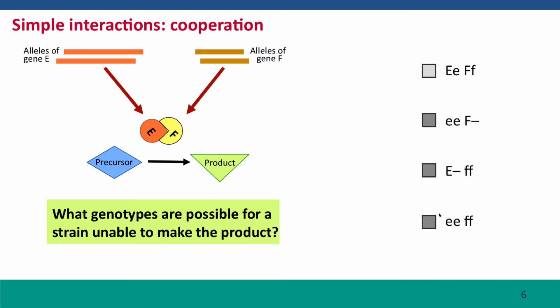This time, there's three different answers because it could be the case that the strain was defective in producing protein E. So it was knocked out for both alleles of gene E.